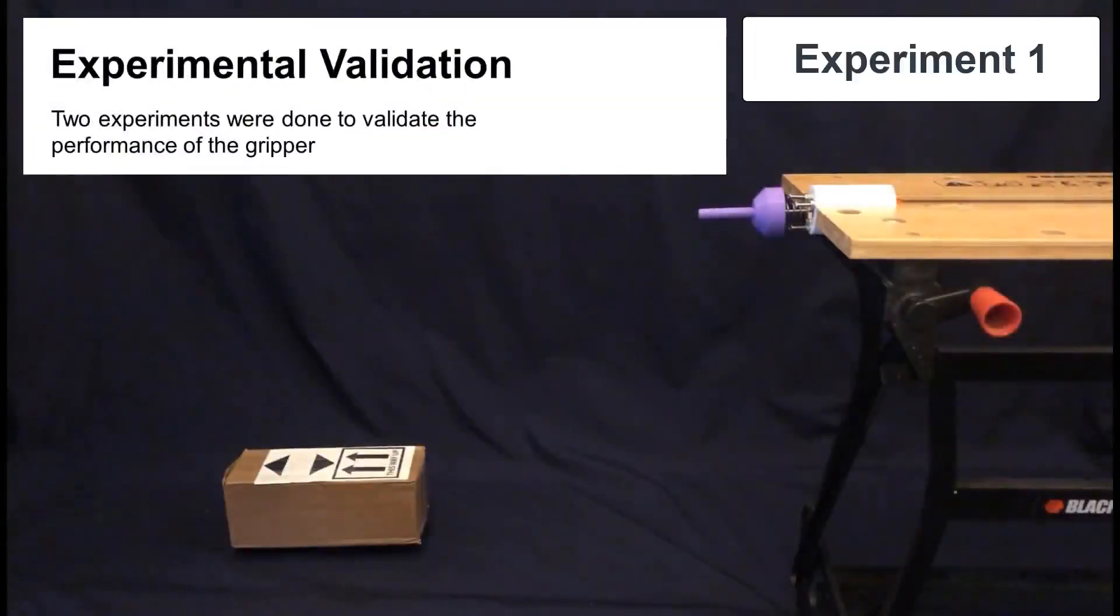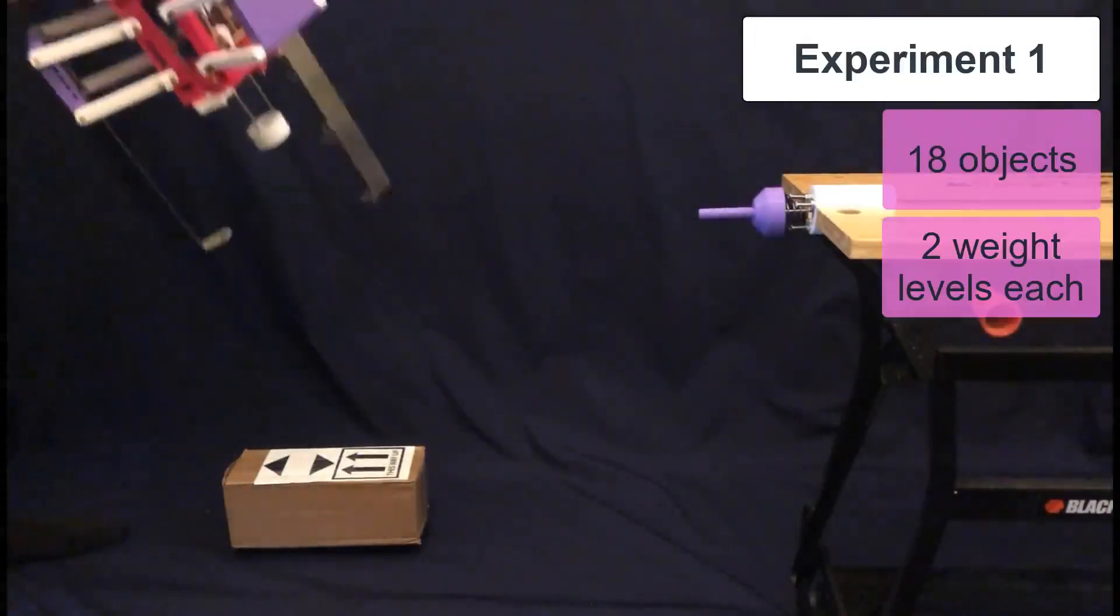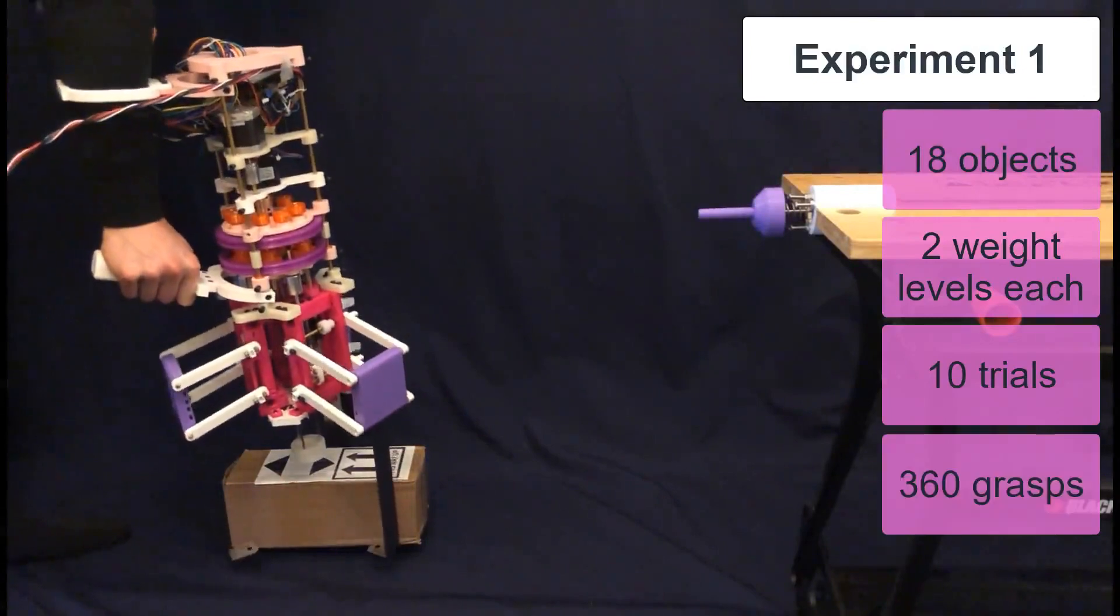Two experiments were done. Experiment one used 18 objects at two weights to test grasping stability.